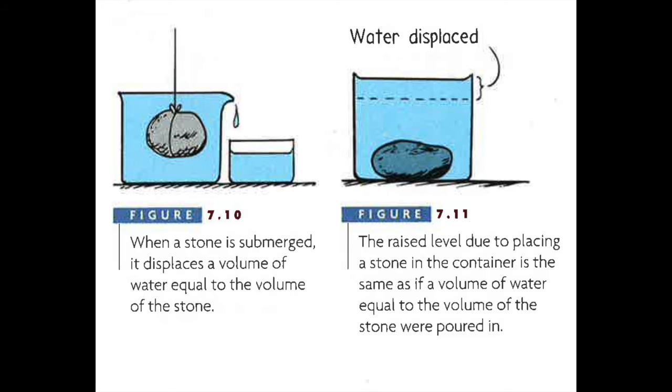So you could take that water, that difference of water, and you could weigh that water, and you could find out the buoyant force of that rock. When the rock is in the water, the buoyant force of the water. And if the buoyant force is greater than the mass of the object or the weight of the object, then the object will float. For example, wood, the density is less than.